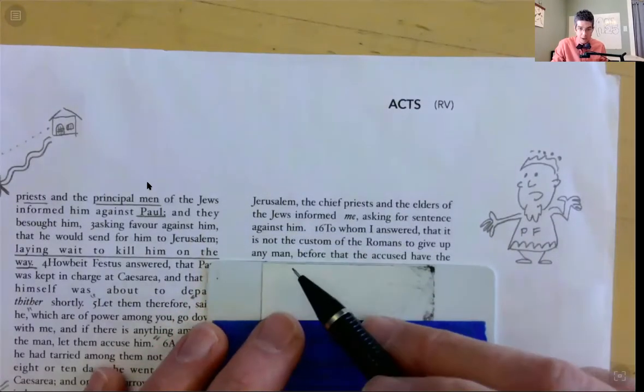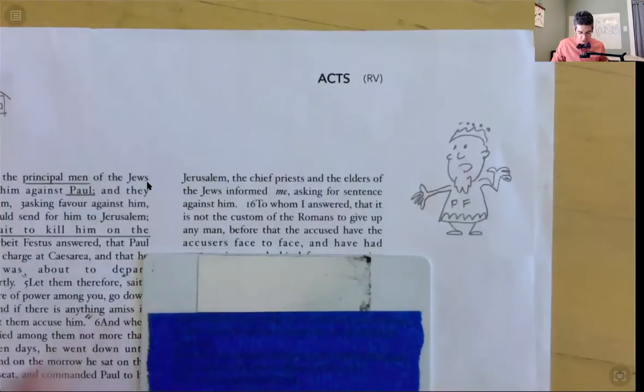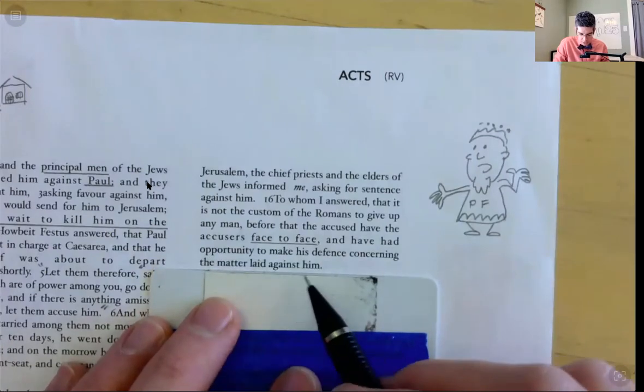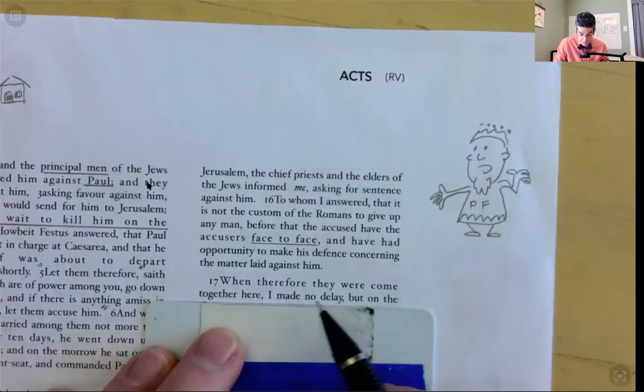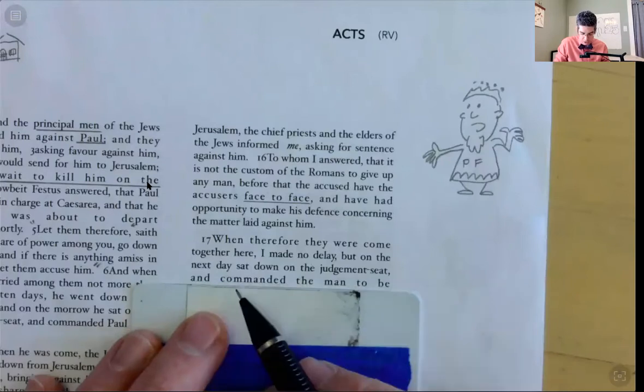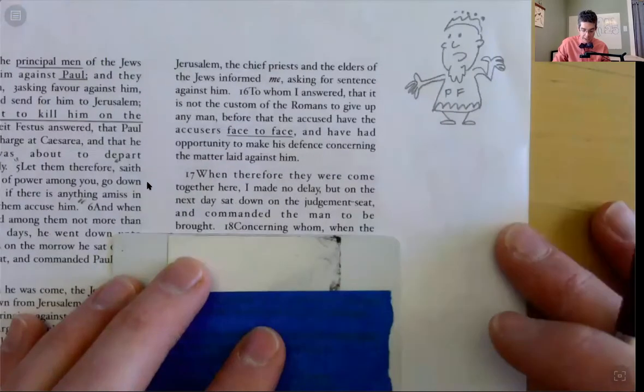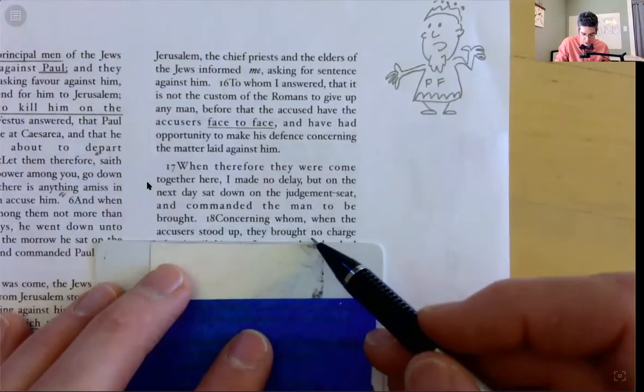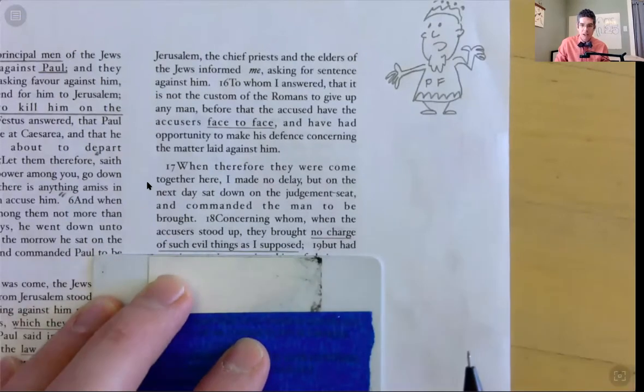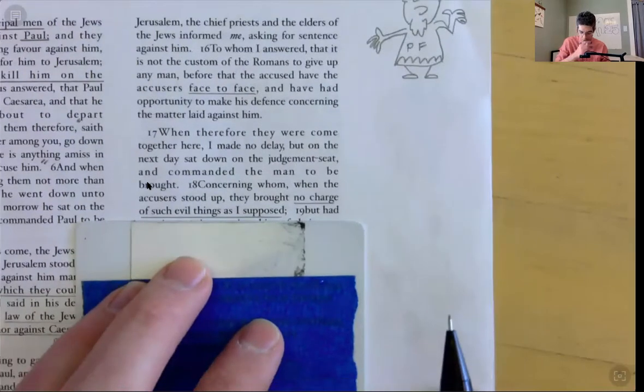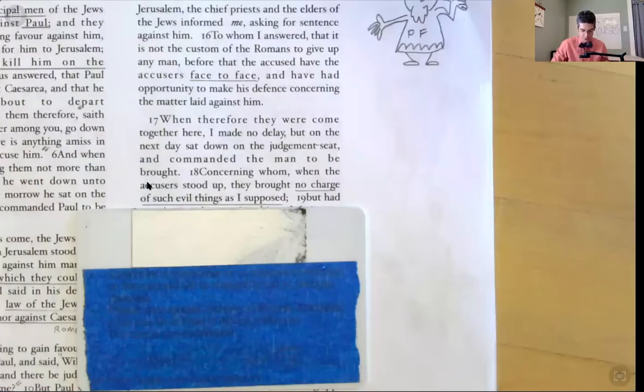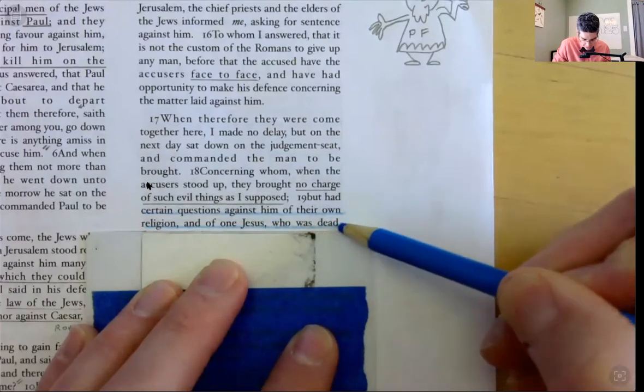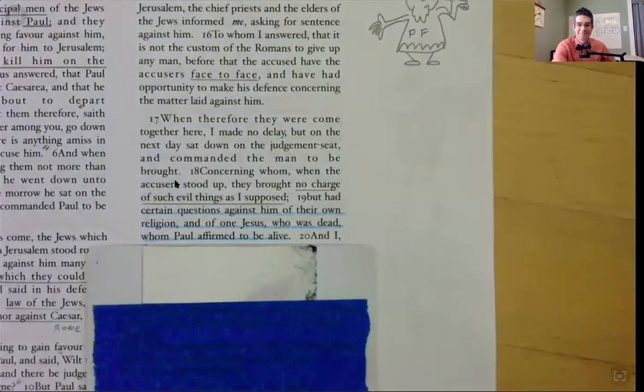They asked me to sentence against Paul, to whom I answered that it is not the custom of the Romans to give up any man before the accused have the accused face to face. He needs to go on trial, you need to have a face to face trial. When, therefore, they were come together here, I made no delay, but on the next day sat on the judgment seat and commanded the man to be brought. He's basically telling the story we just read, how Paul came out and defended himself. Concerning whom, when the accusers stood up, they brought no charge of such evil things as I supposed. Did they have a good argument against Paul? Nope.